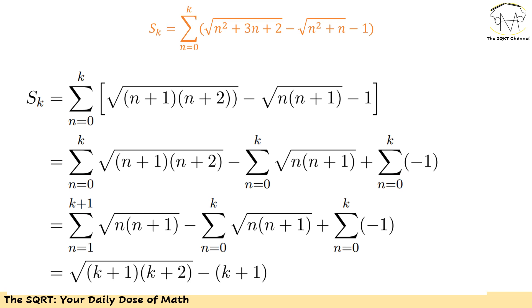Now, for the first term I have (n+1)(n+2) and for the second term I have n(n+1). Let me distribute the sigma: I will have the sigma of the first term minus the sigma of the second term, plus the sigma of negative 1, for n equals 0 to k. The trick here is that σ√((n+1)(n+2)) for n=0 to k can be rewritten as σ√(n(n+1)) for n from 1 to k+1.